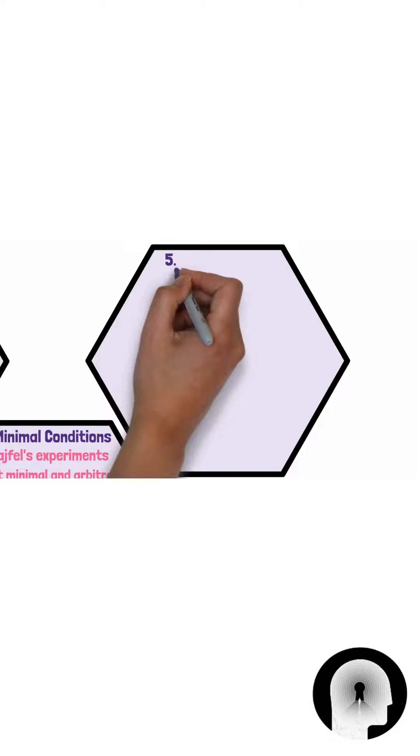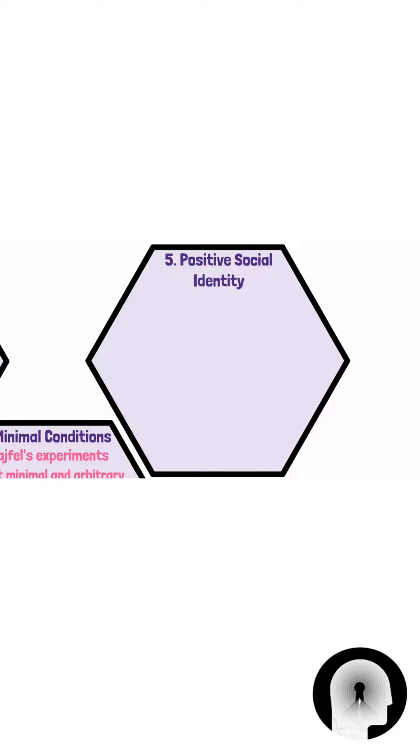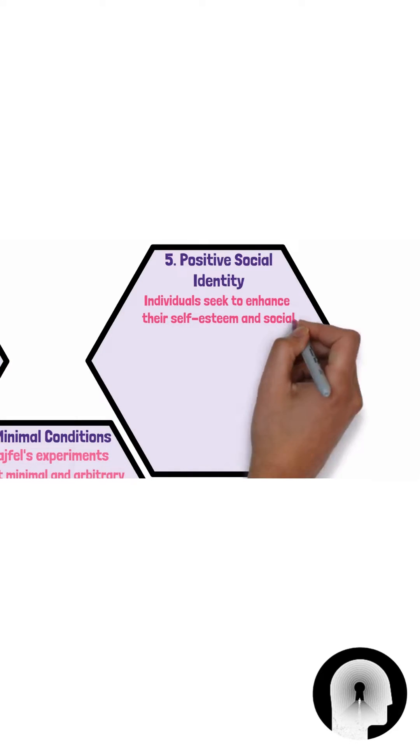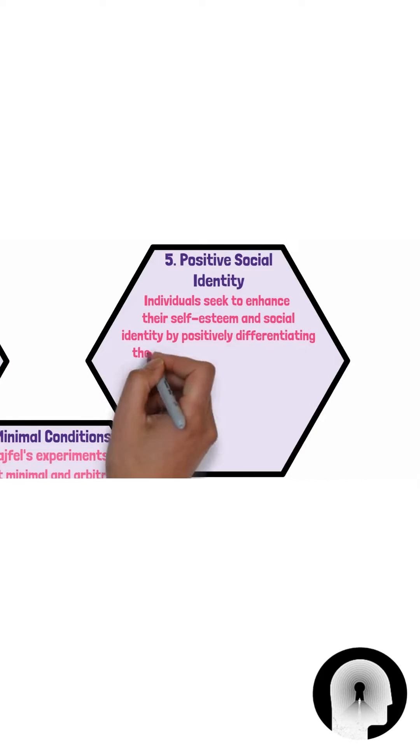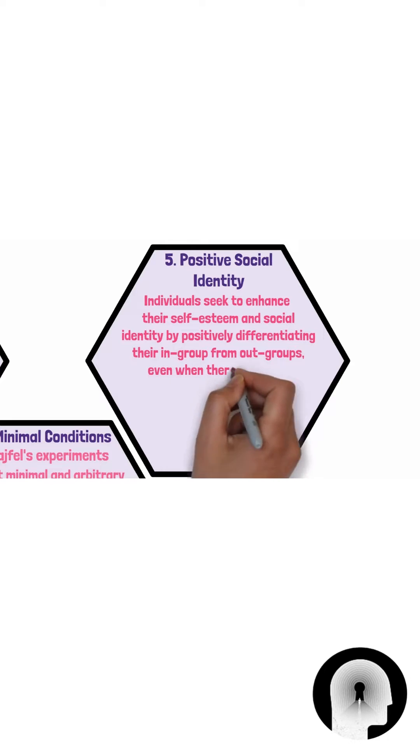And lastly, positive social identity. The findings supported social identity theory's central idea that individuals seek to enhance their self-esteem and social identity by positively differentiating their in-group from out-groups, even when there is no real basis for such differentiation.